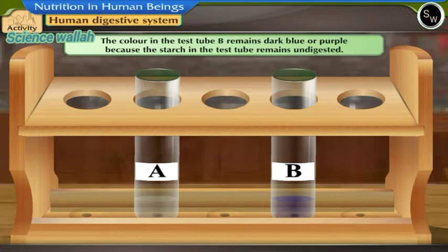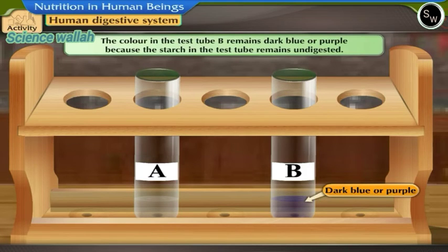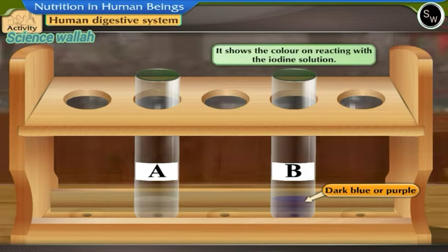The color of the solution in test tube B remains dark blue or purple as it was earlier because the starch in the test tube remains undigested. It shows the color on reacting with the iodine solution.